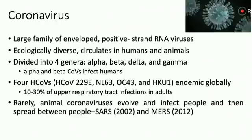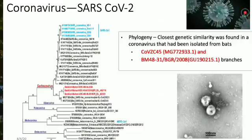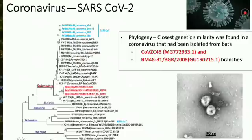Rarely, some animal coronaviruses evolve, infect humans, and develop an ability to spread between humans. In the past two decades, we have seen two coronaviruses which led to significant morbidity and mortality: the SARS coronavirus in 2002 and the MERS coronavirus in 2012. Now in 2019-20 we have the SARS-CoV-2 virus leading to COVID-19. The gene map of this virus shows that although it has some similarity with the SARS coronavirus from 2002, it is distinct from it. It has a very close genetic similarity to bats, which has led some experts to believe it probably originated from bats, although detailed scientific evidence is yet to come.